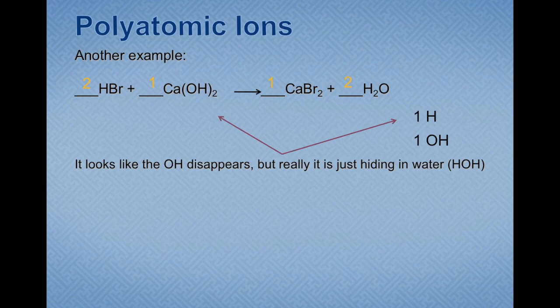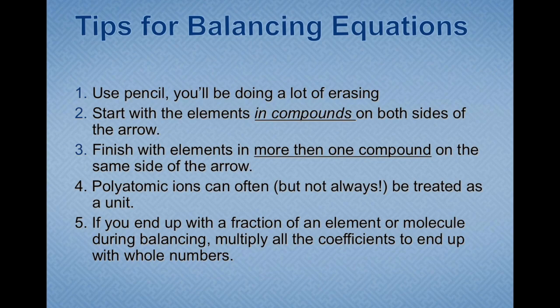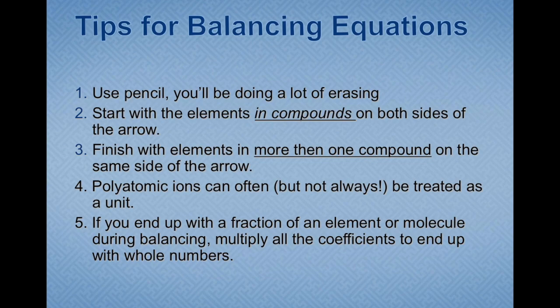Now I'll give some tips for balancing chemical equations. First, use a pencil because you'll be doing a lot of erasing — sometimes you start balancing and realize you have to adjust amounts after looking at all the elements. Second, start with elements in compounds on both sides of the arrow before pure elements, because pure elements are easier to handle at the very end. Third, finish with elements that appear in more than one compound on the same side of the arrow — I'll get to examples of that.